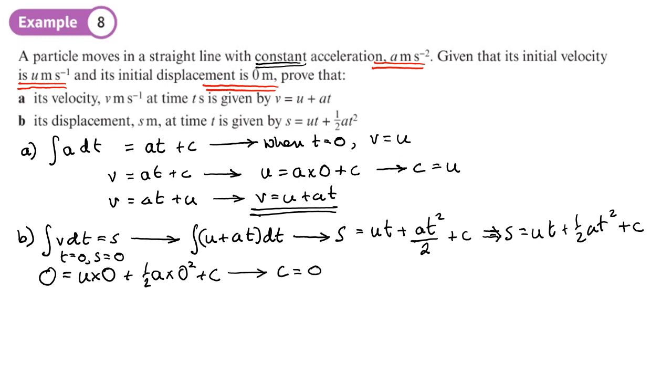So zero equals u times zero plus half times a times zero squared plus c. What does that mean? That means c equals zero. So we're just left with s equals ut plus half at squared. Here we go, so we've proved that, and we've proved this as required.